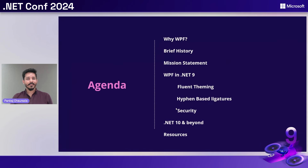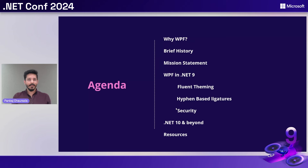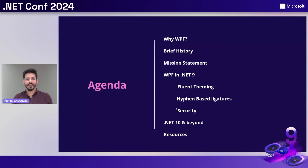Here's our agenda for today. We'll start with why WPF and give a little bit of background on why WPF still matters. We'll touch upon the brief history of WPF — where we started from and where we landed — the mission statement going forward, and what we expect WPF to evolve into. Then we'll focus on the improvements in .NET 9, including fluent theming, hyphen-based ligatures, and security updates. Finally, we'll conclude with the plan ahead from .NET 10 and beyond, high-level goals, and resources to help you get started.